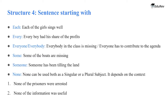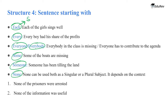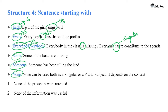Structure 4: sentences starting with 'each,' 'every,' 'everyone,' 'everybody,' 'some,' 'someone,' or 'none.' Each is singular: 'Each of the girls sings well.' Every is singular: 'Every boy had his share of the profits.' Everyone and everybody are also singular: 'Everybody in the class is missing,' 'Everyone has to contribute to the agenda.' These words take singular verbs.